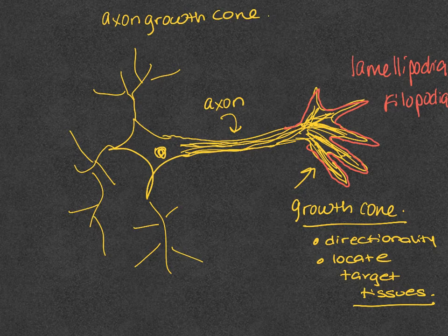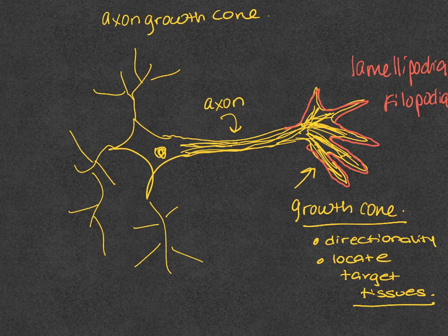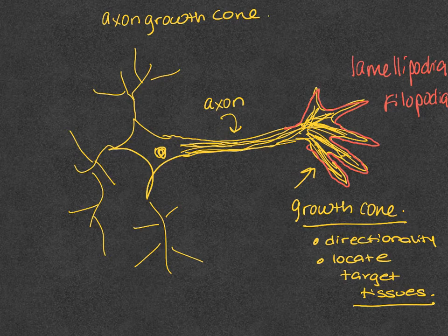The lamellipedia provide the major motile apparatus that allows the microfilaments and the actin filaments within this growth cone to turn towards the target tissue or towards the stimulus.